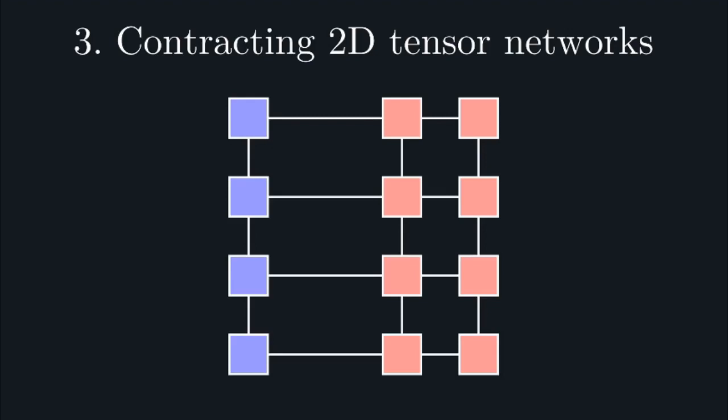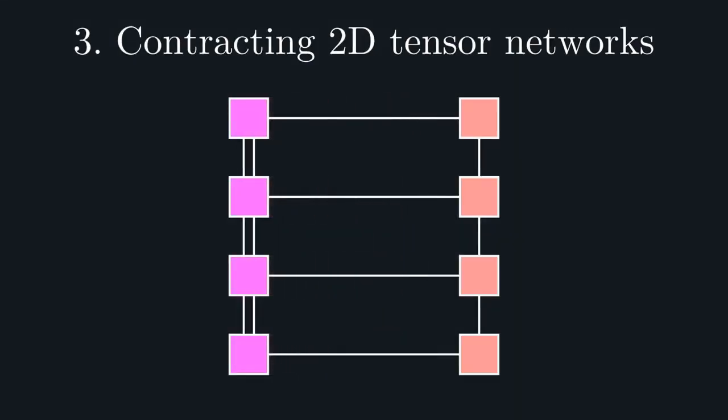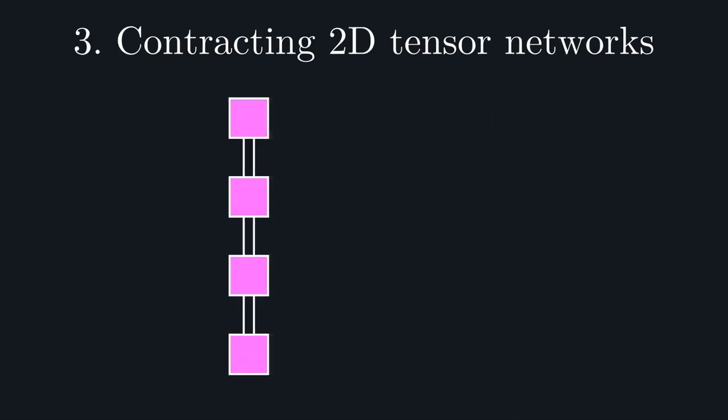We can now simply repeat this procedure for each column, until we're left with a 1D network. This, in turn, can simply be evaluated by performing matrix multiplication, leaving us with our answer.